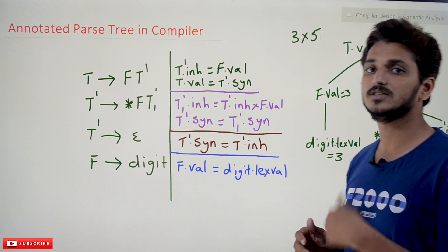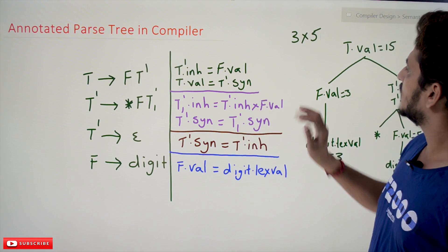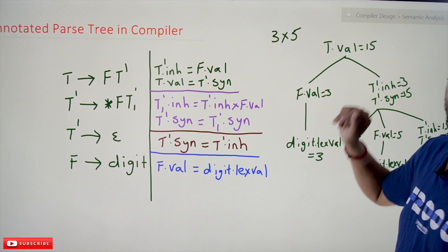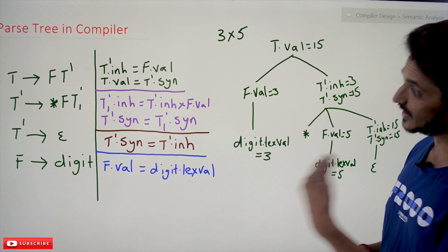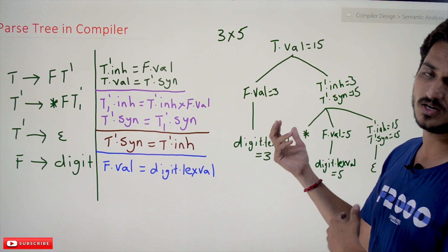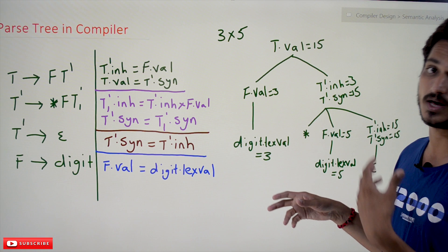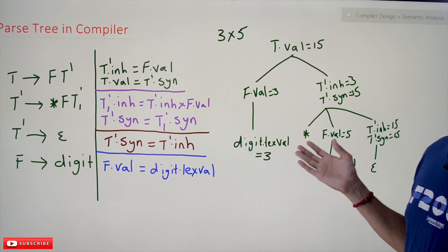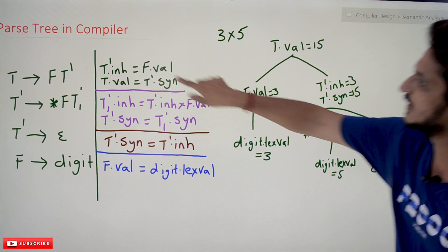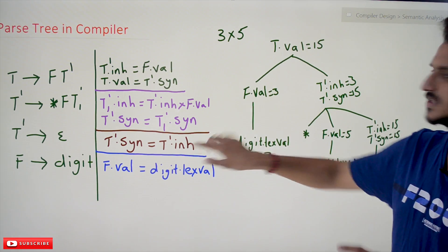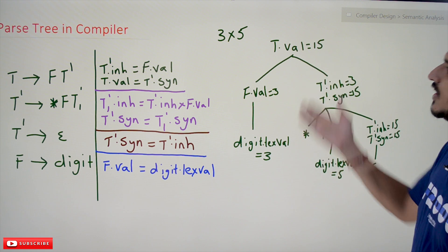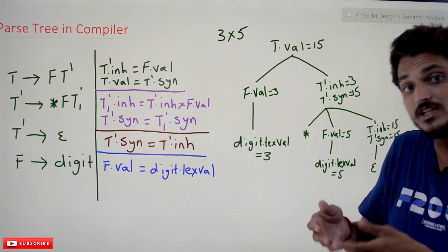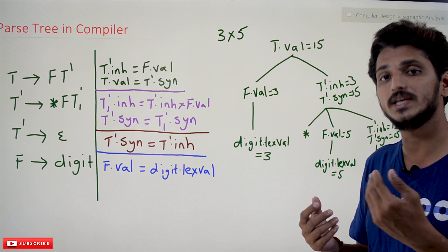Now coming to the annotated parse tree — let's take this example: 3 multiplied by 5. Whenever the context-free grammar is executing, semantic conditions also execute. If you show your parse tree with the values representing those semantic conditions displayed on it, we call it an annotated parse tree. The values that represent the conditions are shown directly on the parse tree nodes.